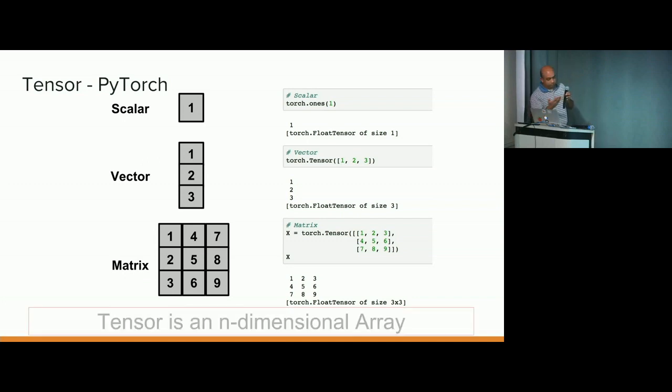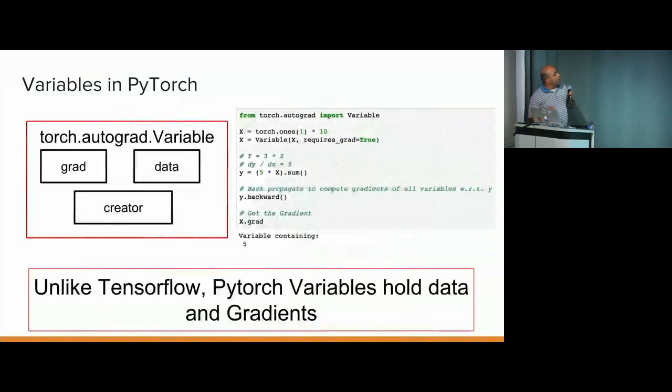Okay, so tensor is an n-dimensional array. That's the general definition. And one thing, when you talk about variables, variables are just a thin wrapper on top of tensors. And what's really nice about what differentiates PyTorch from other frameworks is PyTorch variables hold gradients along with data. And that's going to be very useful later on when you try to debug our network. Holding data and gradients together really makes our job easier of using these APIs.